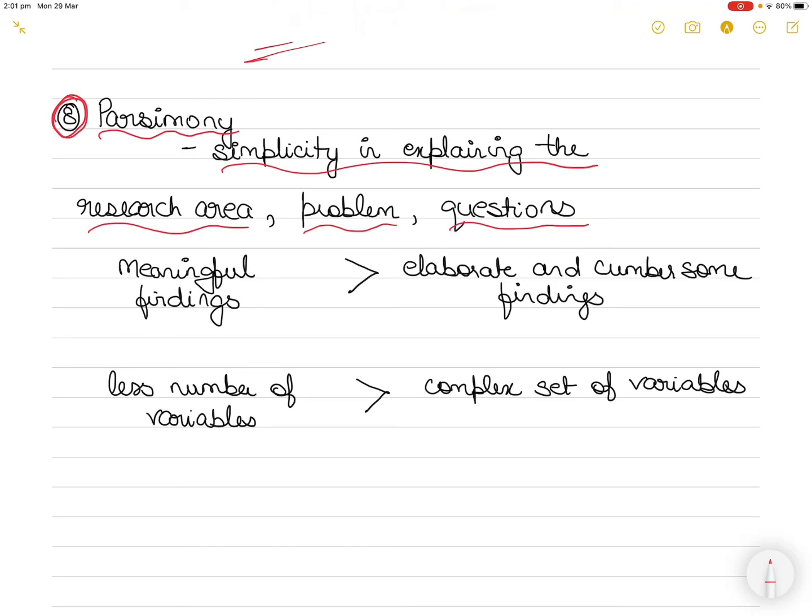Such an unmanageable number of variables might well be totally beyond the manager's or the organization's control. Therefore, the achievement of a meaningful and parsimonious rather than an elaborate and cumbersome model for problem solution becomes a critical issue in research.